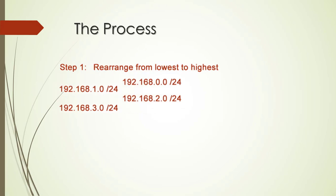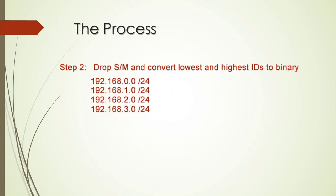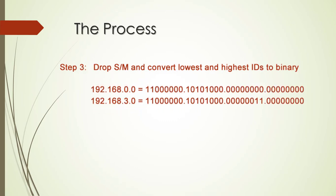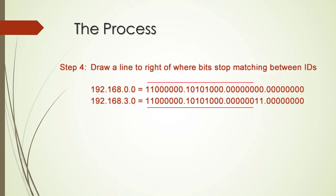Once we have those discovered, then we want to compare the lowest to the highest and we need to convert those both into the binary representation. Now what we're doing is finding where the bits are in common across the two. So we determine which bits those are and wherever those bits stop matching then we want to draw ourselves a demarcation line there to indicate that those bits no longer match.